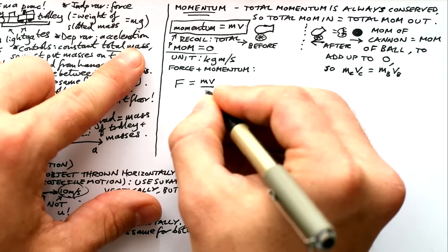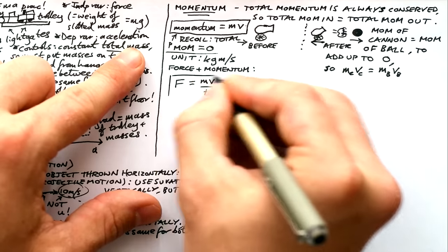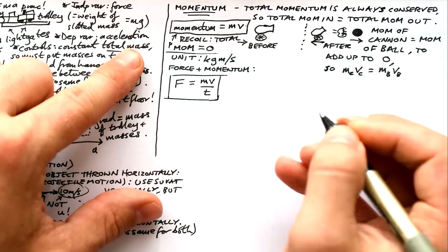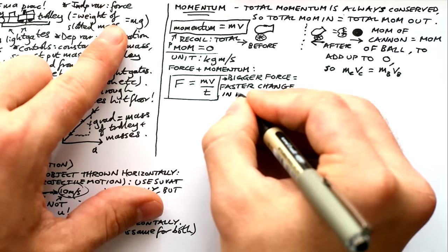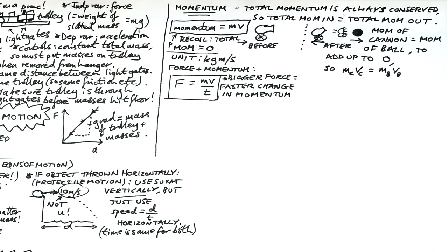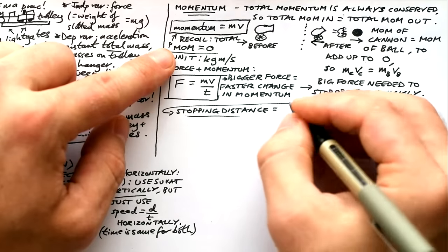Force and momentum are very closely linked by this equation. Force is equal to change in momentum divided by time. That means a bigger force results in a faster changing of momentum or the other way around. Faster changing of momentum needs a bigger force. And this leads nicely onto stopping distance.